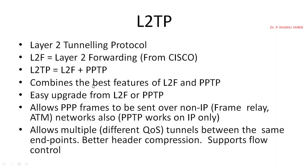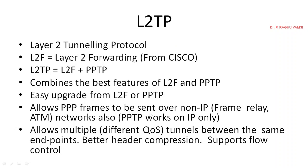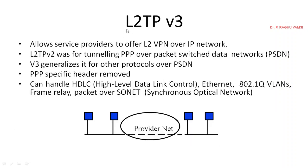In the basic version of L2TP, it works at the frame level — frames being the data link layer. In L2TP version 3, it provides support for IP networks as well — VPN over IP networks. Version 3 generalizes it for other protocols over packet-switched data networks. It can also handle high-level data link control, Ethernet, 802.1Q VLAN, and other protocols.